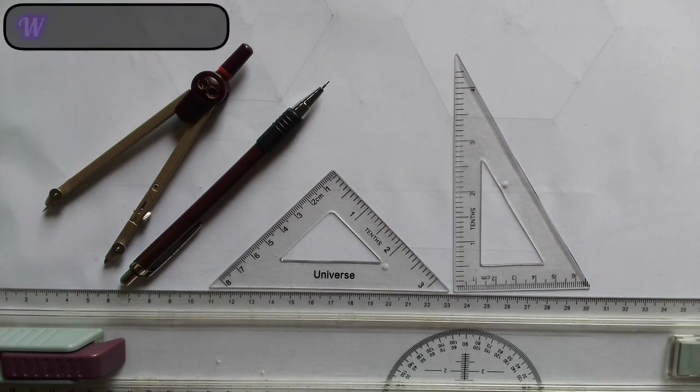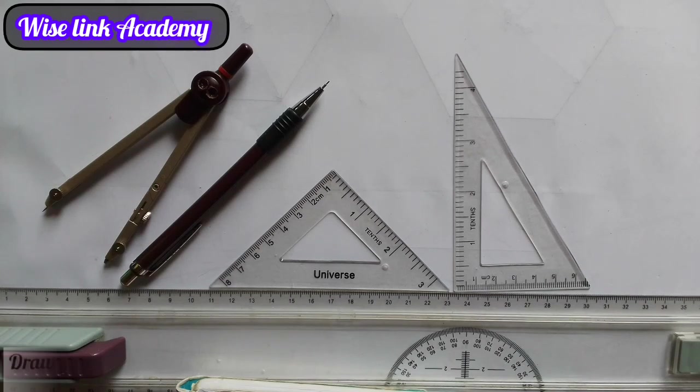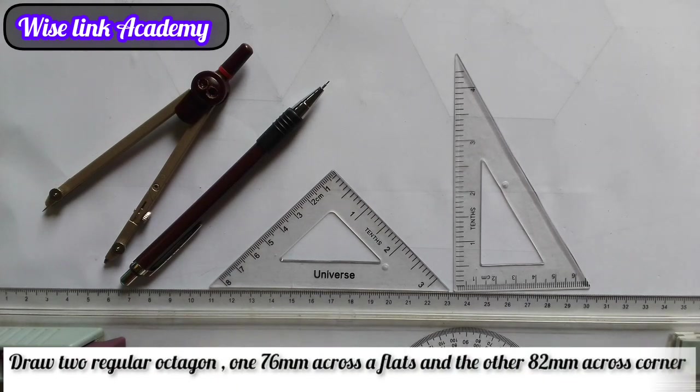Hello and welcome to Wiselink Academy. Today we are going to be looking into geometric construction as you can see the question in front of you. Draw two regular octagons, one 76mm across flat and the other 82mm across corner.